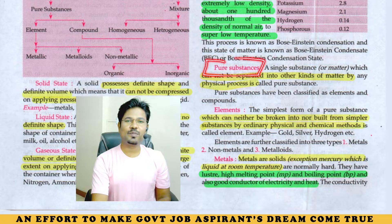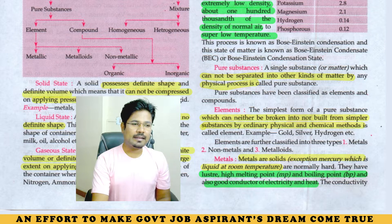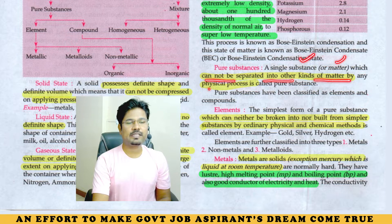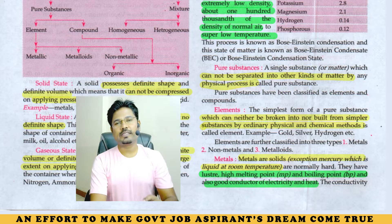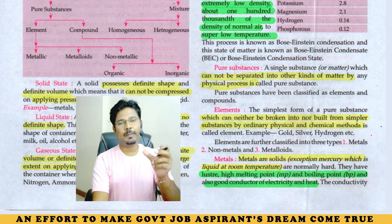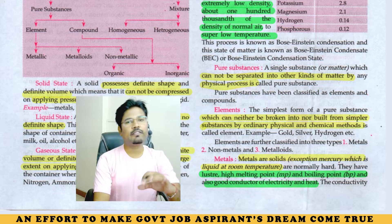Pure substance — what is a pure substance? Matter or substance that cannot be separated into other kinds of matter by physical process is called a pure substance. Pure substance means you cannot divide matter from other kinds of matter through a physical process.